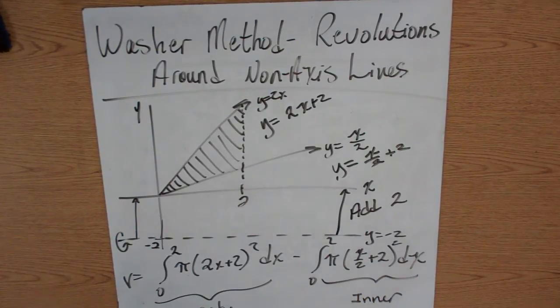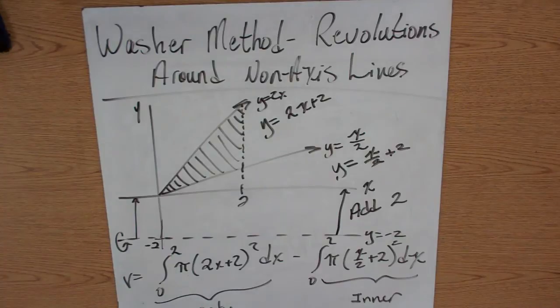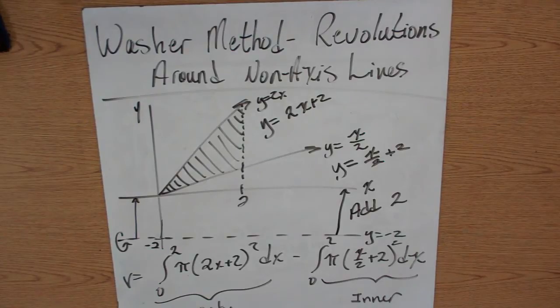How do we determine that? The outer is always the one furthest from the line that you're revolving around, and your inner is always the one closest to the line you're revolving around.